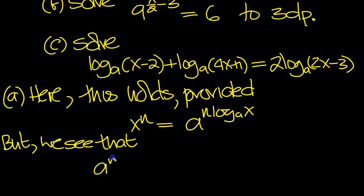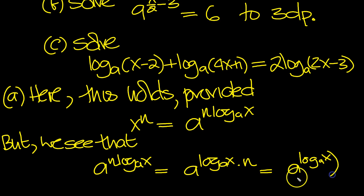So a to the n log a of x is equal to - let's just swap these two things around - log a of x times n. And using properties of indices, that will be a log a of x to the power n. Power power, you times.